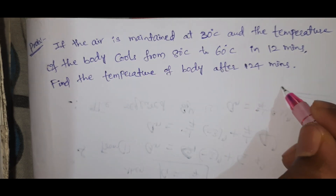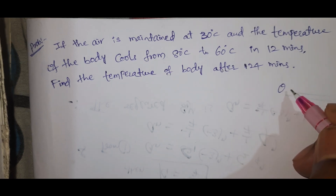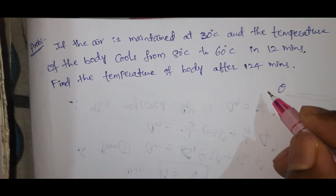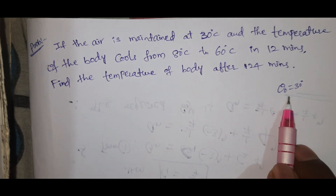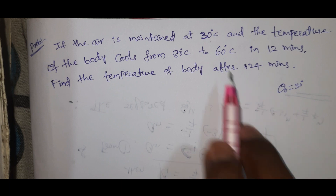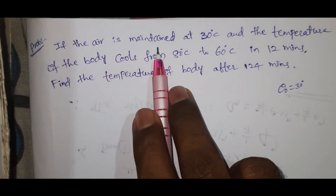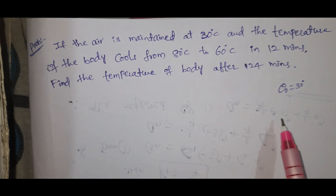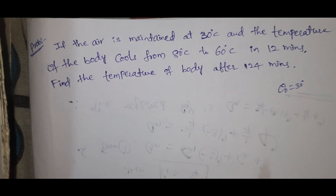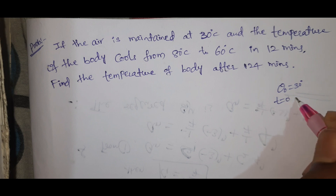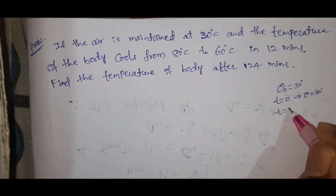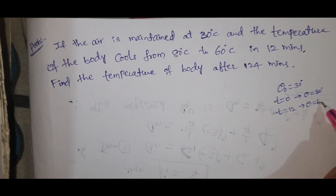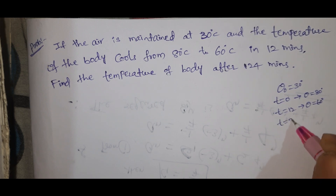The surrounding area temperature theta naught is maintained at 30 degrees centigrade. At starting time t equal to 0, theta is equal to 80 degrees centigrade. At t equal to 12 minutes, theta is equal to 60 degrees centigrade. At t equal to 24 minutes, we will find out what theta is.